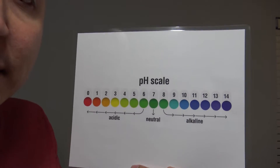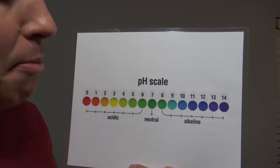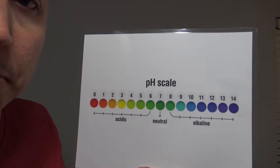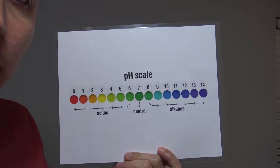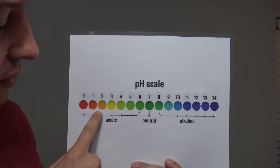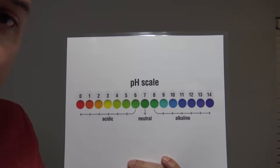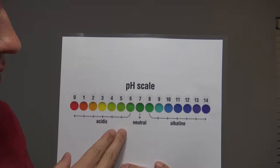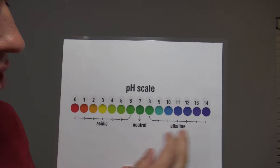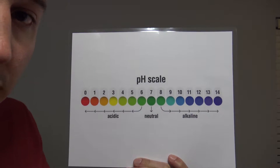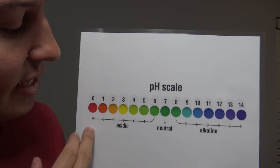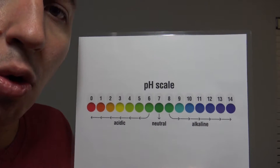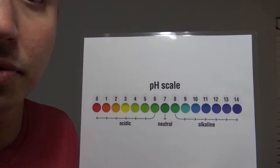Another term for alkaline is basic — you've heard the terms acid and base before? That's what that refers to. A couple of quick examples: lemon juice would be an acid with a pH of 2, and baking soda is a base with a pH of 9. One thing you want to know is when you get really extreme on the scale, that's when safety concerns start to arise. Extremely acidic or basic materials are what we call reactive and can actually cause severe burns.